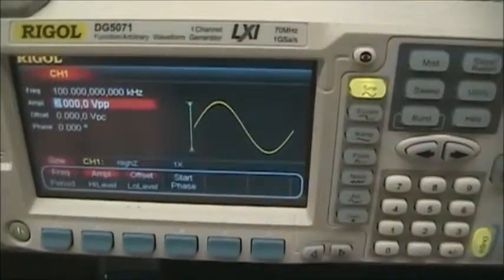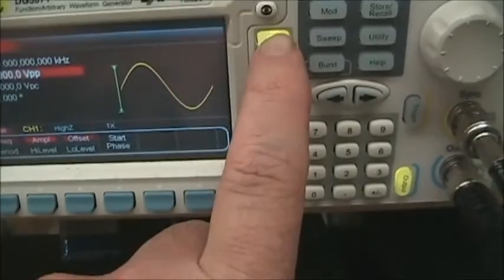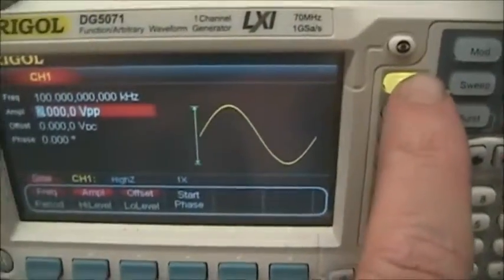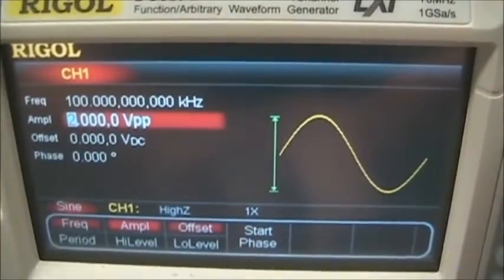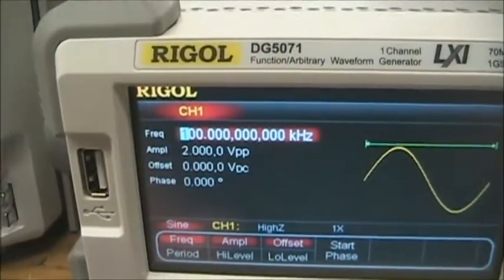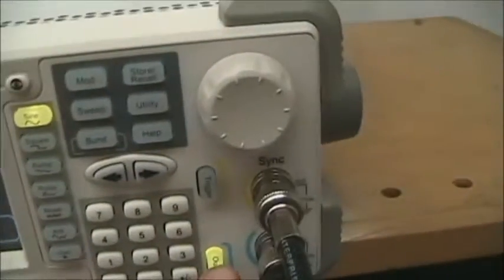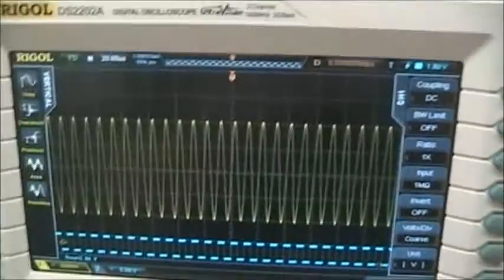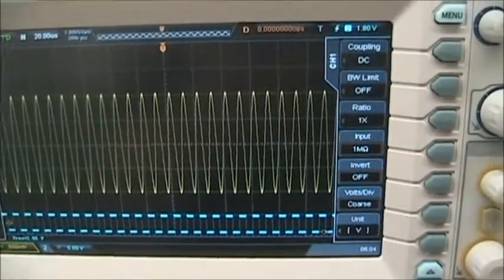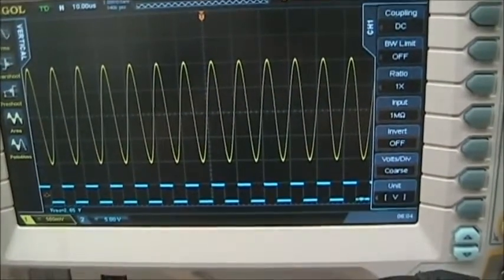So the carrier frequency will be associated with the sine function. In this case, we're going to set it to 100 kilohertz and 2 volts peak to peak for the amplitude. If we enable that, we'll see a signal represented on the scope. We won't measure it in terms of the values, but you could do that if you wanted.